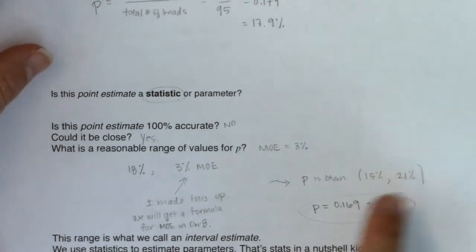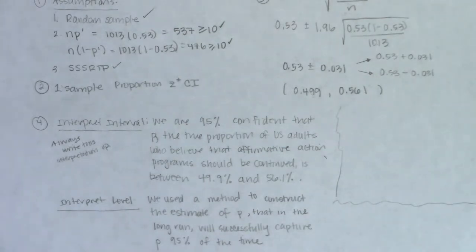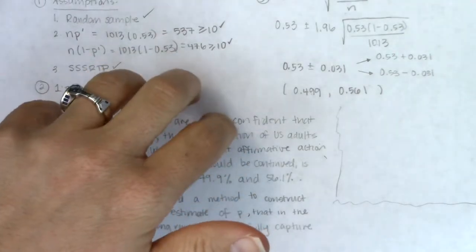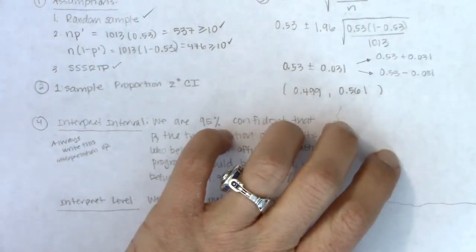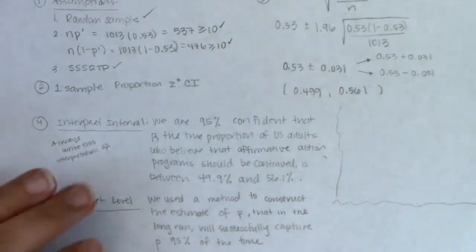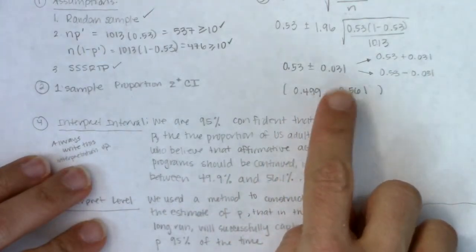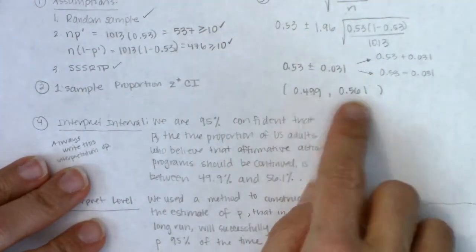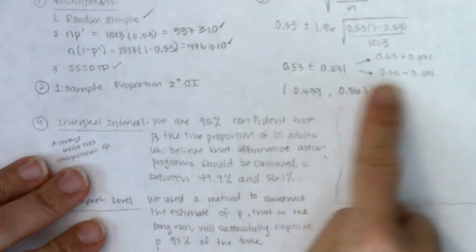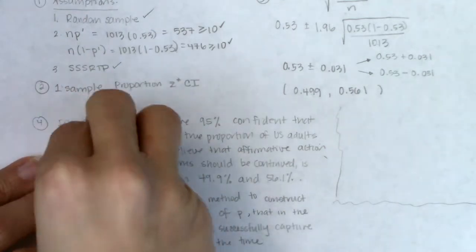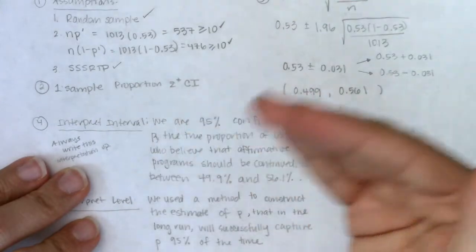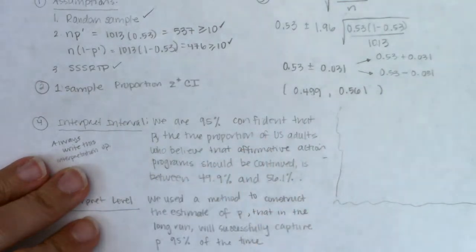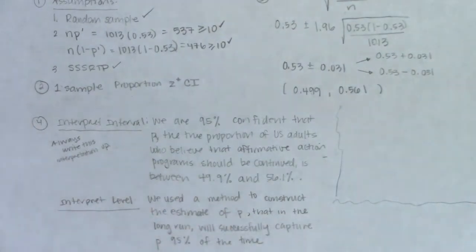To use the calculator: hit STAT, then go to TESTS. Skip options 1 through 6 — those are hypothesis tests for chapter 9. Scroll down to option 7 and beyond for intervals. For proportion intervals, look for the word 'prop.' Option A is 1-PropZInt — that's what we use for a one-sample proportion z* confidence interval in chapter 8.